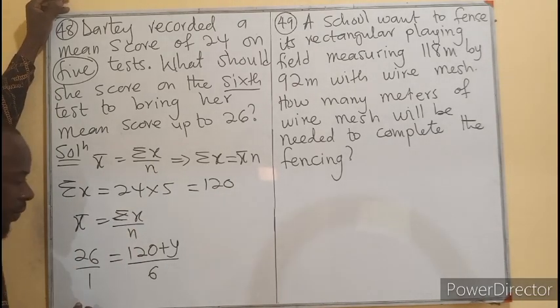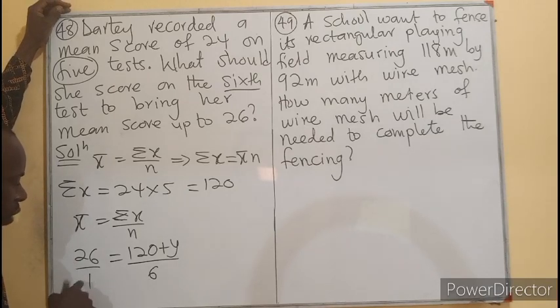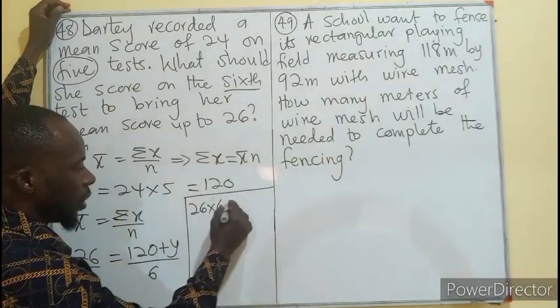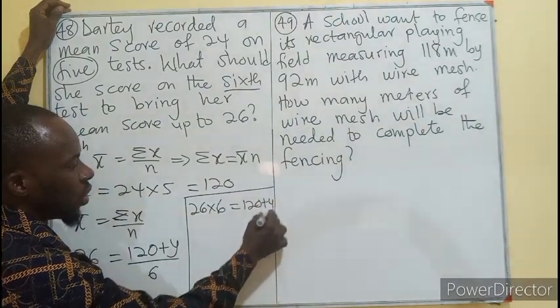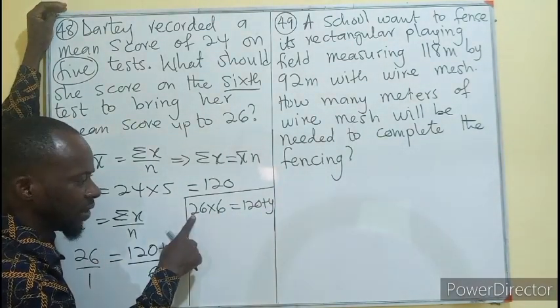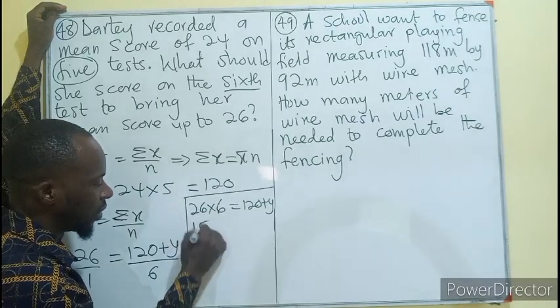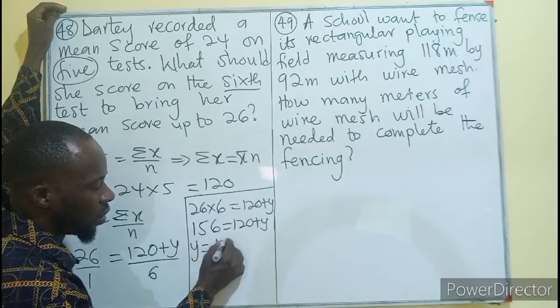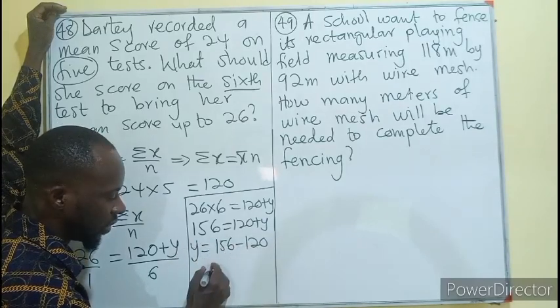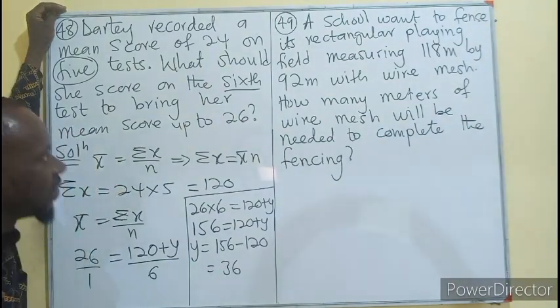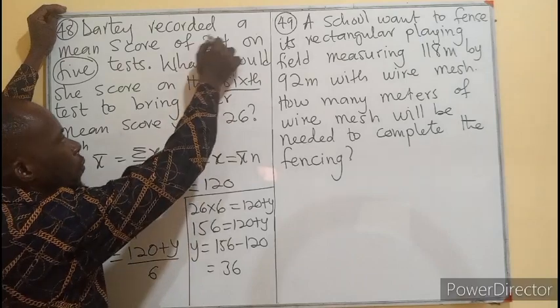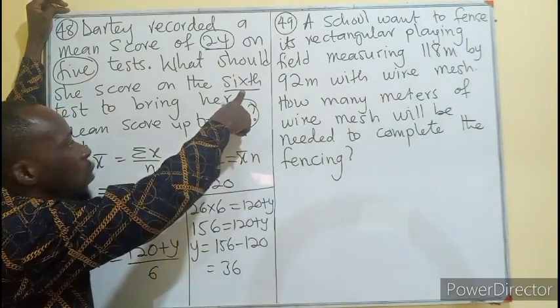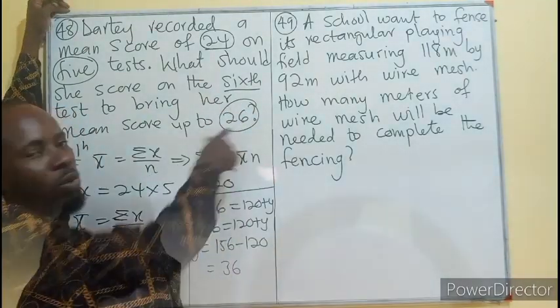So this will be a cross multiplication. You have six multiplying this, then one multiplying this. So this becomes 26 times 6 equals 120 plus Y. I believe this will give us 156. So 156 equals 120 plus Y. So Y would just be 156 minus 120 and that would be 36. It means for the mean score to move from 24 to become 26, the next test score should be 36. If not, the mean will decrease.